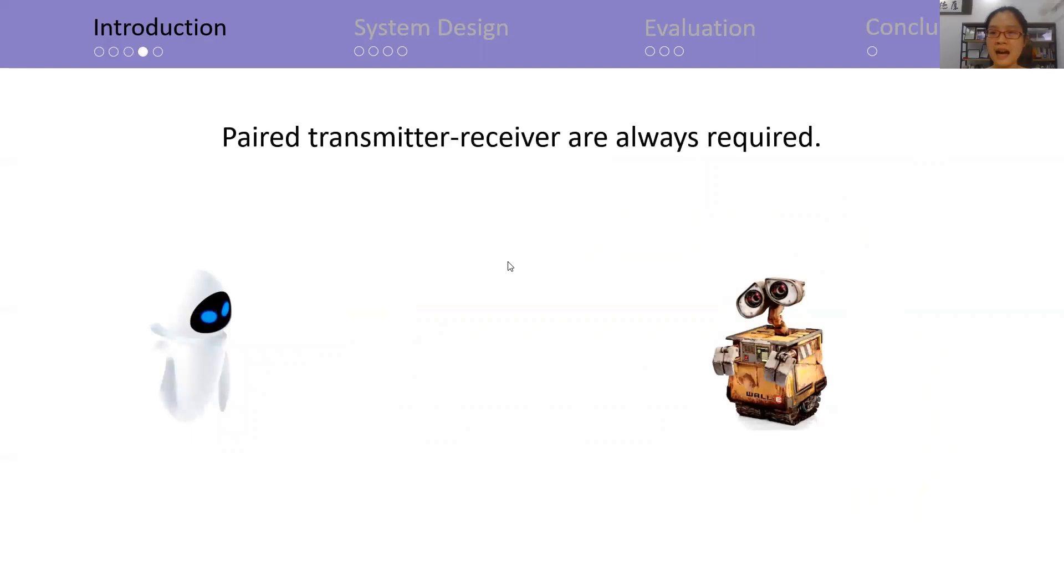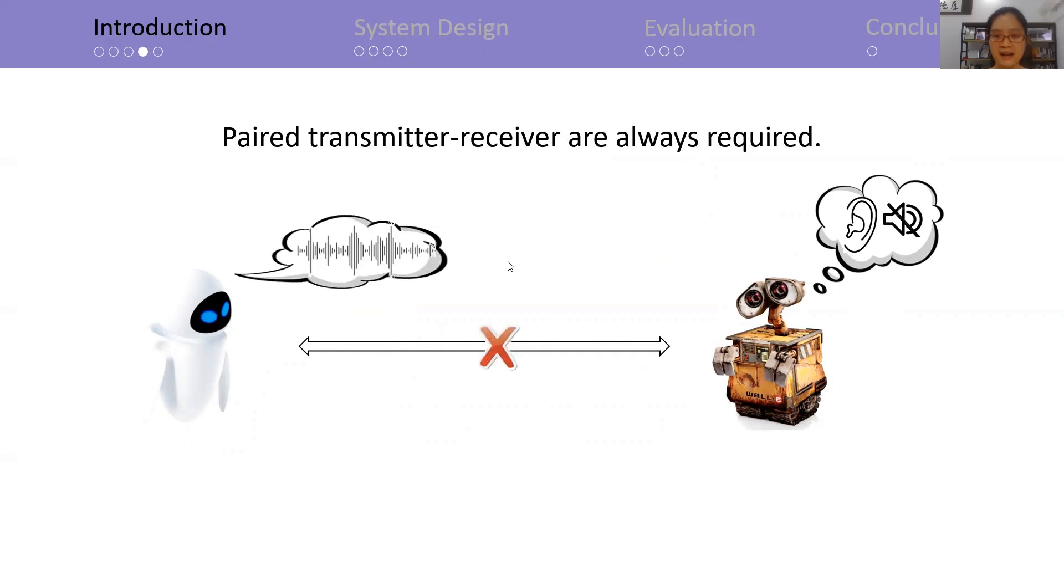In addition, current wireless communication always requires necessary pairing between the transmitter and the receiver. Considering WALL-E is too old, its pairing component is out of order, both in hardware and software. It's like WALL-E is deaf, so he fails to hear what you said.